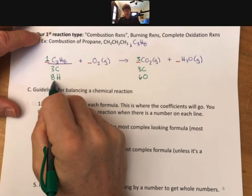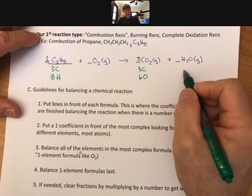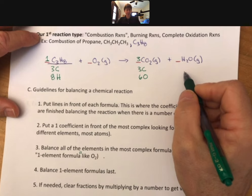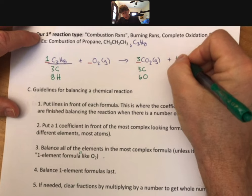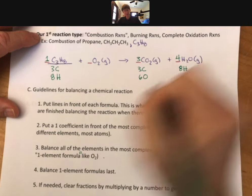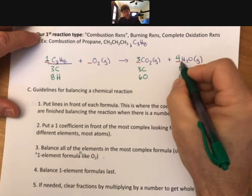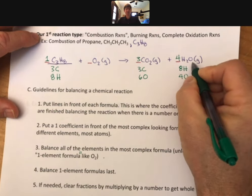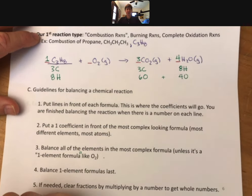Now I'm going to balance my hydrogens. I have eight hydrogens on the reactant side. I need eight hydrogens on the product side. Hydrogens come two at a time. I'm going to put a four here and that gives me eight hydrogens and it also gives me four oxygens. Four times the one oxygen in this formula. So now I have ten oxygens on the product side.